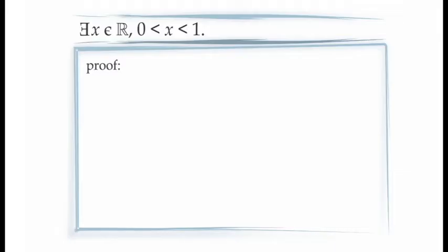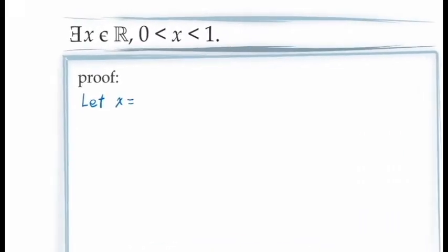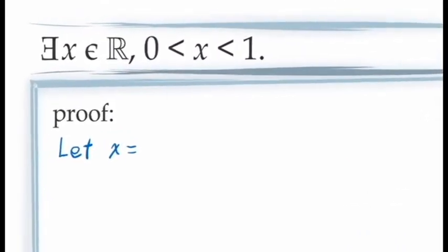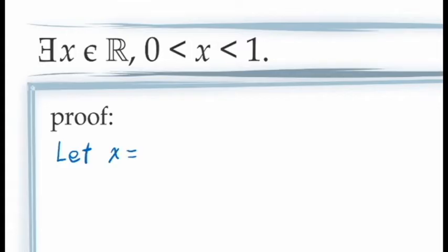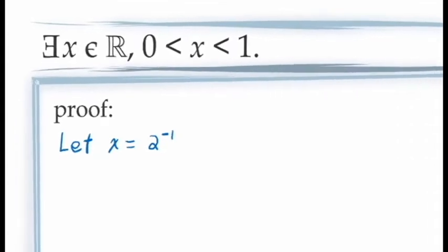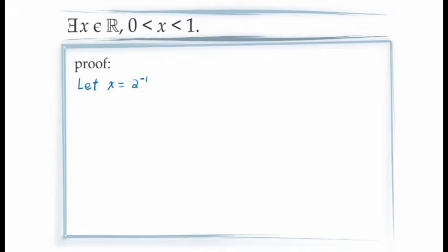Let's return to our proof. In this case, we're trying to prove that there is at least one real number x that is between 0 and 1. Using the principle of existential generalization, we need to start this proof by giving an example of a value of x that has that property. We need to sit down and think: can we come up with a specific real number that we know is between 0 and 1? One obvious choice might be one half, or in other words, the inverse of 2. So we can start our proof by saying: let x equal the inverse of 2. From here, we need to demonstrate that our example satisfies the statement — that is, that the inverse of 2 falls between 0 and 1.